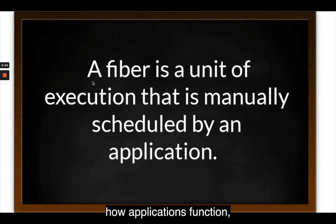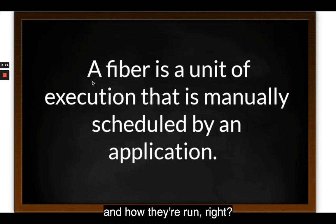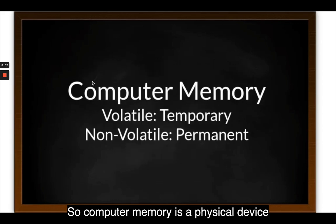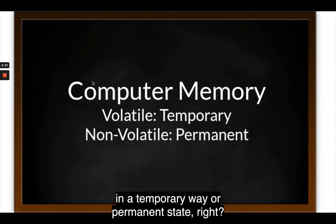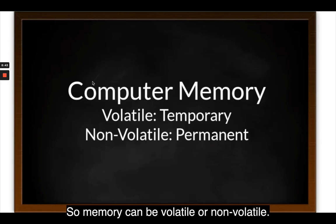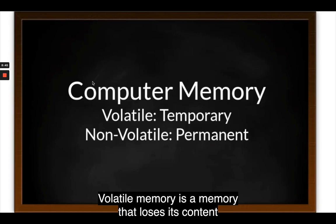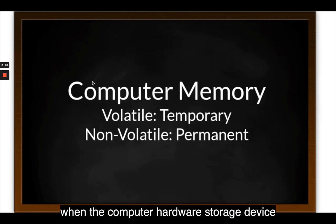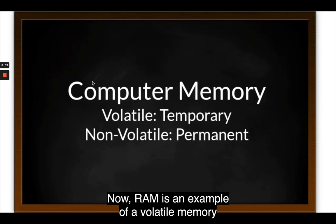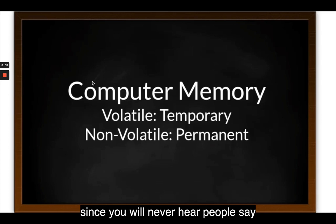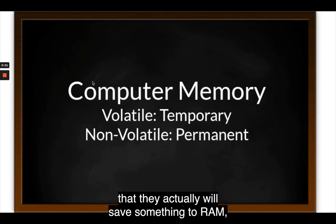Now that we've covered how applications function, let's look at where they are installed and how they are run. Computer memory is a physical device or hardware capable of storing information in a temporary or permanent state. Memory can be volatile or non-volatile. Volatile memory loses its content when the computer or hardware storage device loses power or is rebooted. RAM is an example of volatile memory.